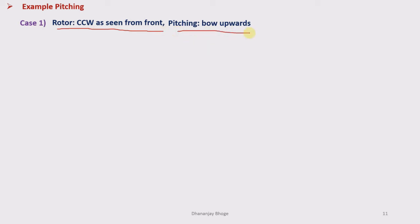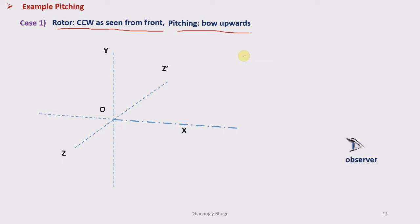Let us take an example where a rotor rotates counterclockwise as seen from the front side, and the ship pitches upward — meaning the bow of the ship is rising in the upward direction from its mean position. In Method 2 we make use of a coordinate system consisting of mutually perpendicular axes. We place the observer at the end of the positive x-axis always, and draw the ship along the x-axis between the observer and the positive x-axis.